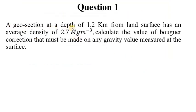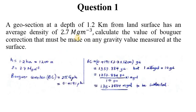A geo-section at a depth of 1.2 kilometers from the land surface has an average density of 2.7 megagrams per cubic meter. Calculate the value of the Bouguer correction that must be made on any gravity value measured at the surface. This question asks us to do a correction on gravity measurement, so we want to take one of the example questions so that we can see the process or how significant this kind of correction is to geophysical survey or gravity measurement.